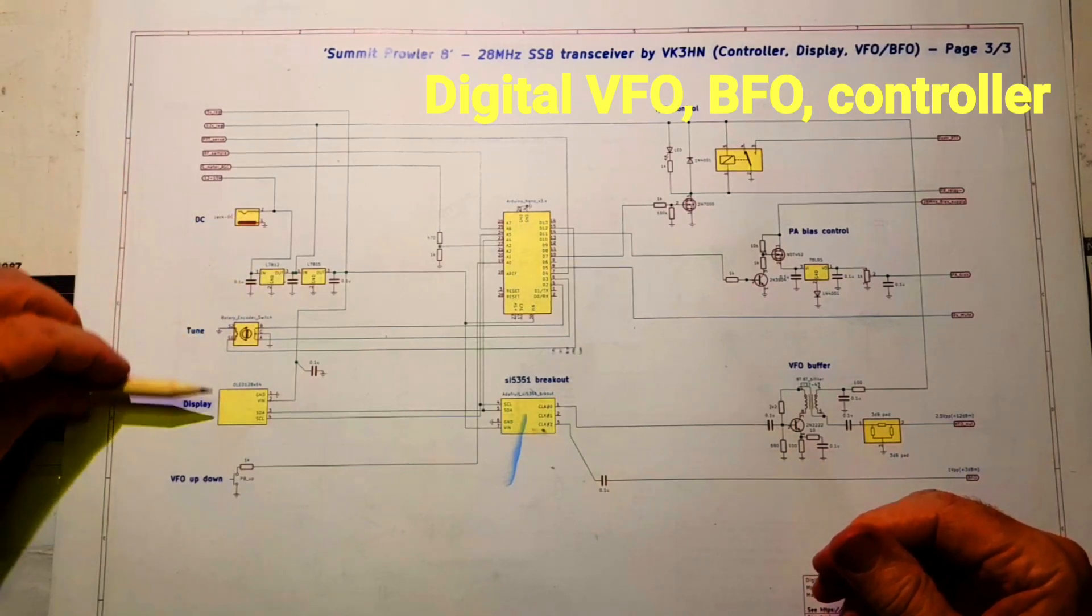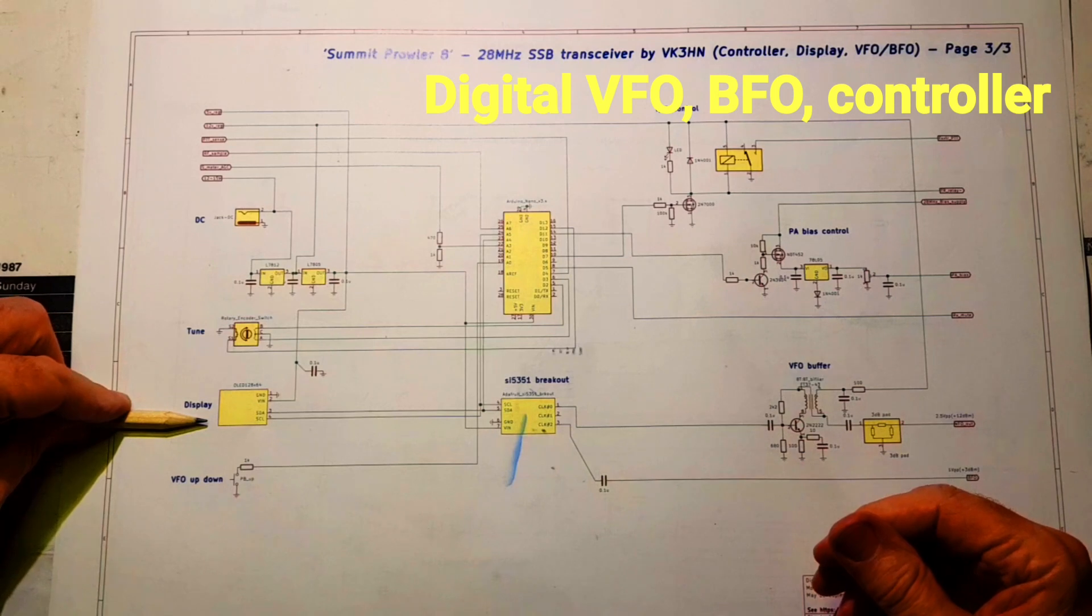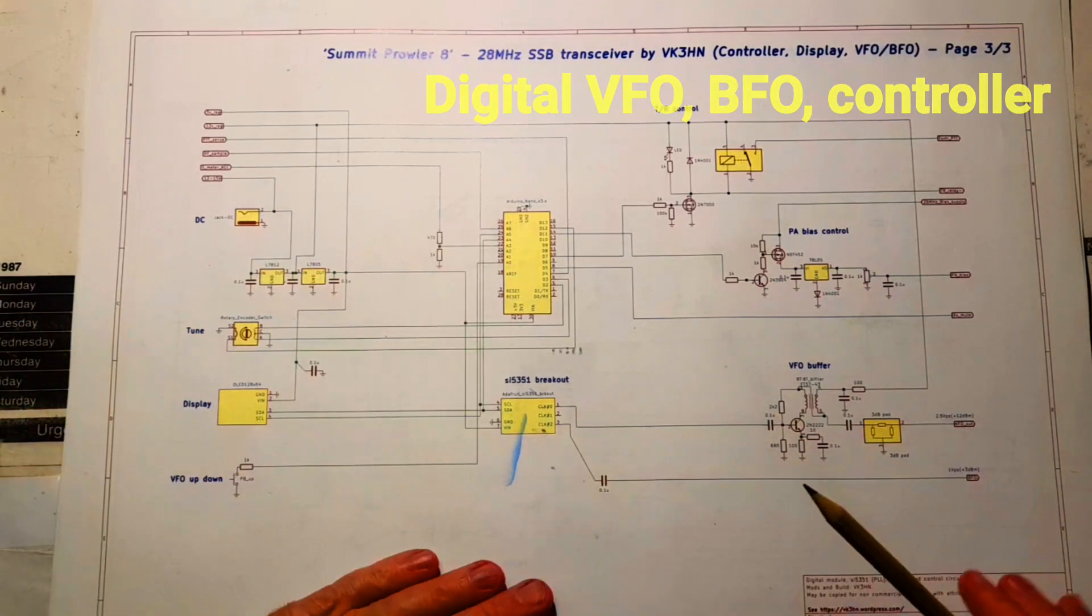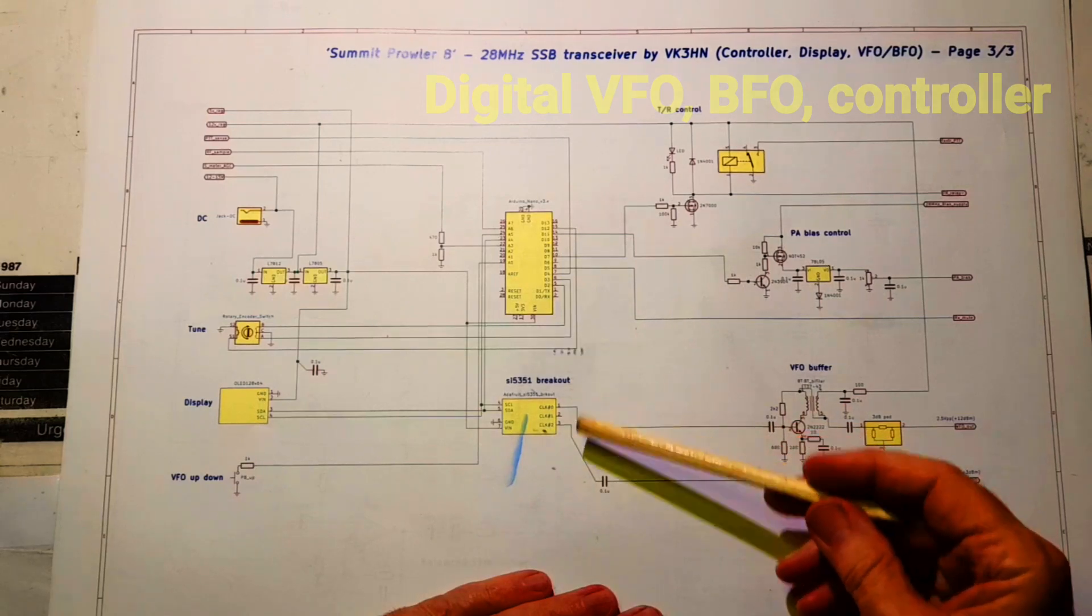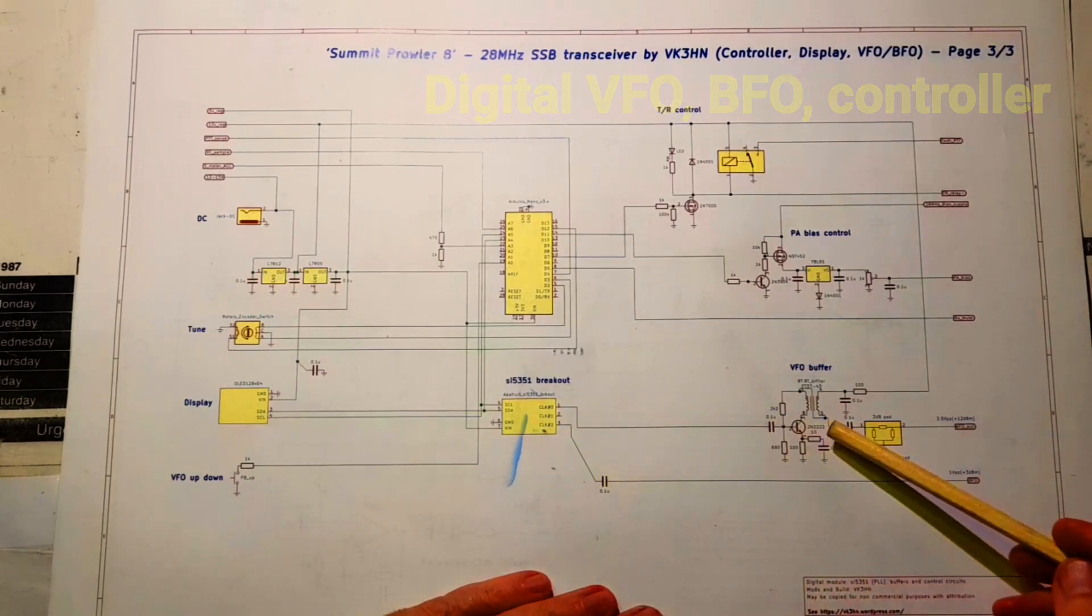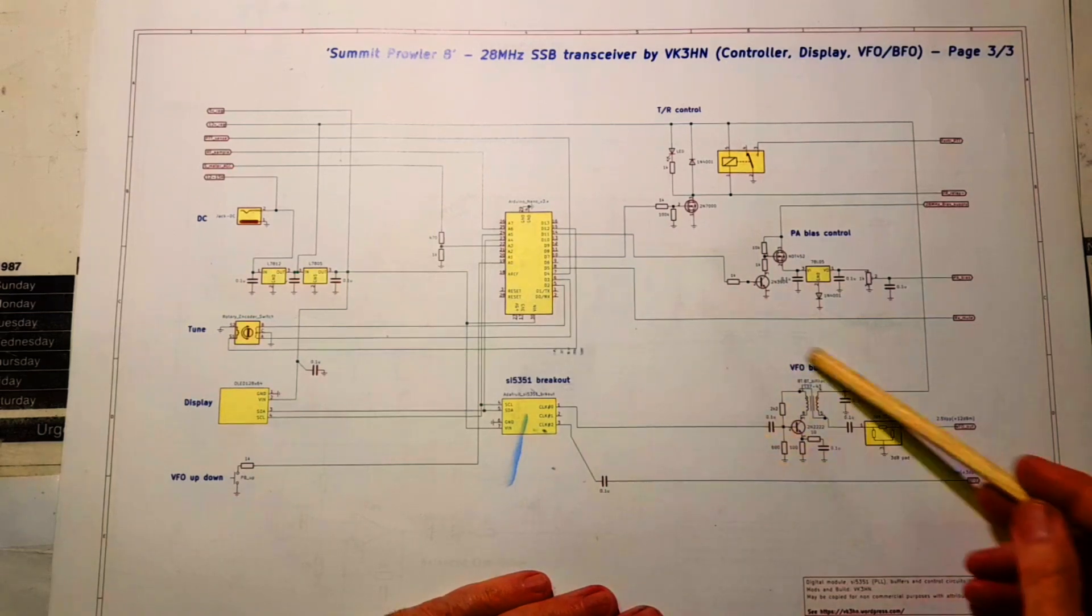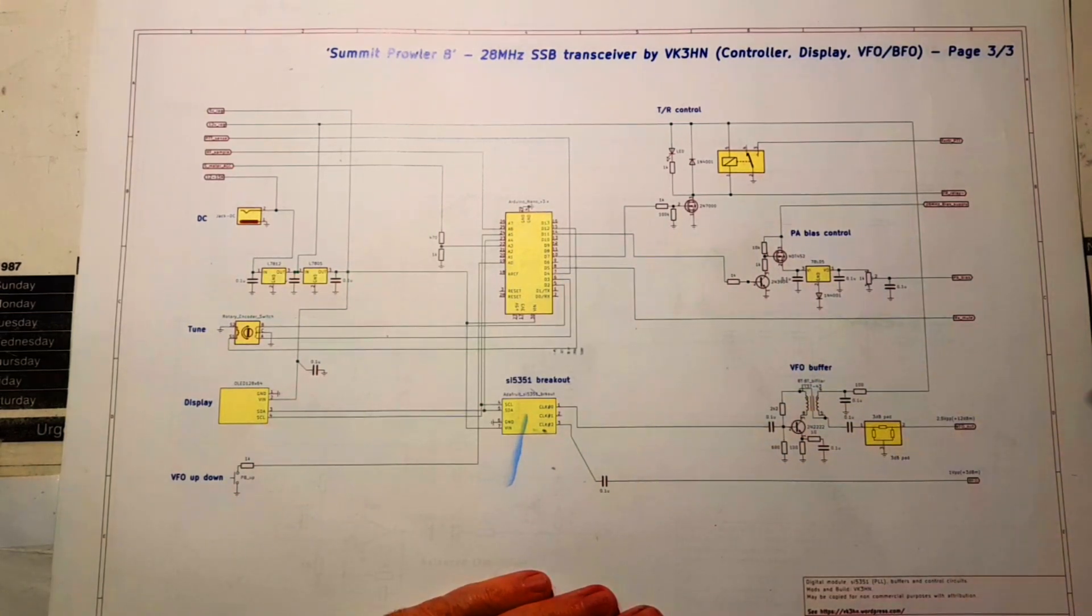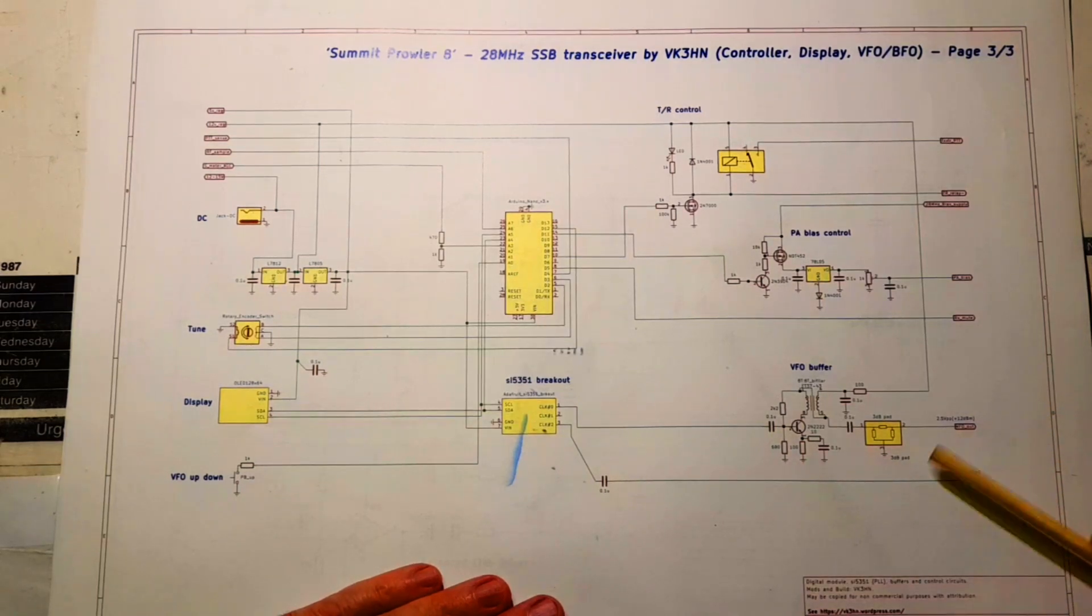All the usual controls down the left-hand side here. In this case, the display is an OLED 128 by 64, a lovely little display. On the clock outputs, clock zero is the VFO, and that goes through a general-purpose broadband buffer that brings it up, and a following pad just to stabilise impedances delivers about plus 12 dBm on 37 MHz.